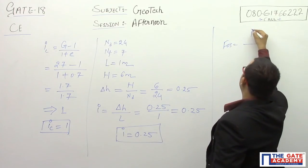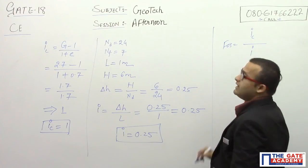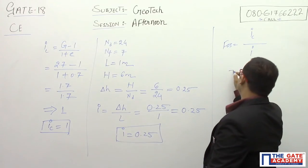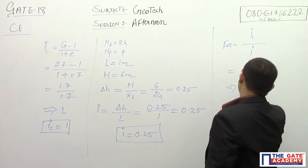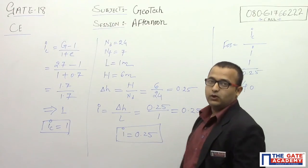FOS equals critical hydraulic gradient divided by actual hydraulic gradient. So it equals 1 divided by 0.25, which equals 4. The factor of safety is equal to 4.